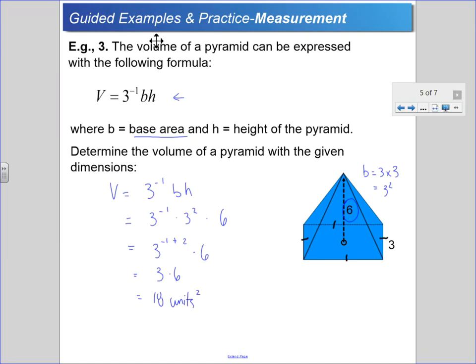Another way to do this is to take the three to the minus one and using the negative exponent rule, create a fraction by switching the side of the exponent. So I could take one third, and three squared is nine, then times six. A third of nine is three, three by six gives us another 18 cubic units.